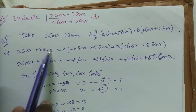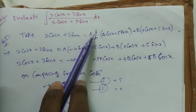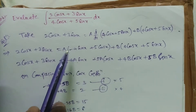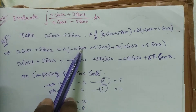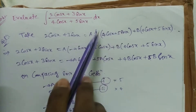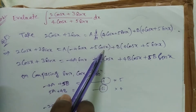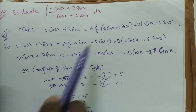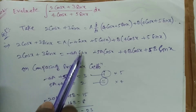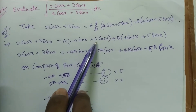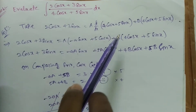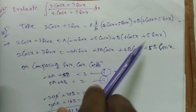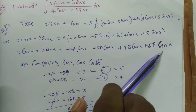So: 2 cos x + 3 sin x = A times d/dx of (4 cos x + 5 sin x) plus B as it is. The derivative gives: A times (-4 sin x + 5 cos x) plus B times (4 cos x + 5 sin x). On expansion: -4A sin x + 5A cos x + 4B cos x + 5B sin x.